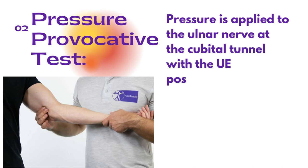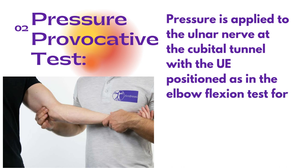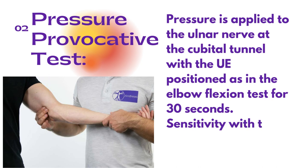After the elbow flexion test, there comes the pressure provocation test. Pressure is applied to the ulnar nerve at the cubital tunnel with the upper extremity positioned as shown in the picture, with the elbow flexion test held for 30 seconds. Sensitivity with this test is very high. Pressure applied on the ulnar nerve produces pain and tingling sensations along the origin and course of the nerve.